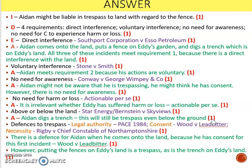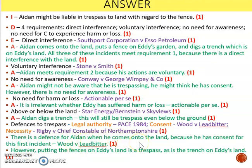I've then explained the rules on trespass above or below the land using the cases, pointing out that when Aiden digs a trench this is a trespass even though it's below the ground. The courts have discussed how deep below the land ownership extends — you own beneath the ground up until the point where the heat and pressure from the core of the earth makes any further discussion moot. So however deep this trench is, it meets that requirement. I've then explained the defenses with cases: Aiden has a defense of consent when he first comes onto the land, but all the other things — digging the trench, leaving the fences — are actionable trespasses.